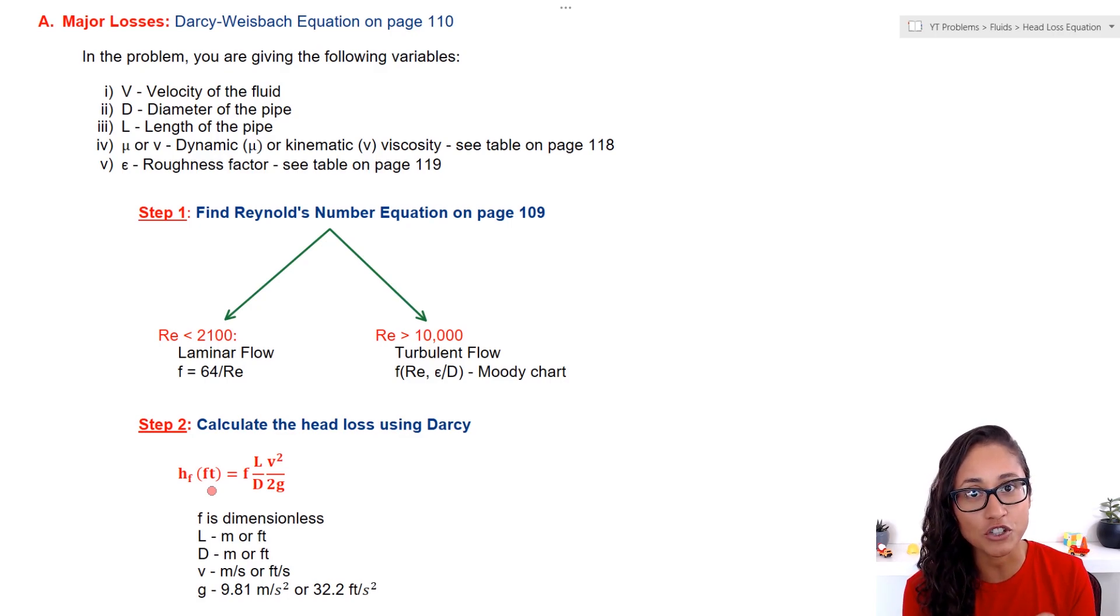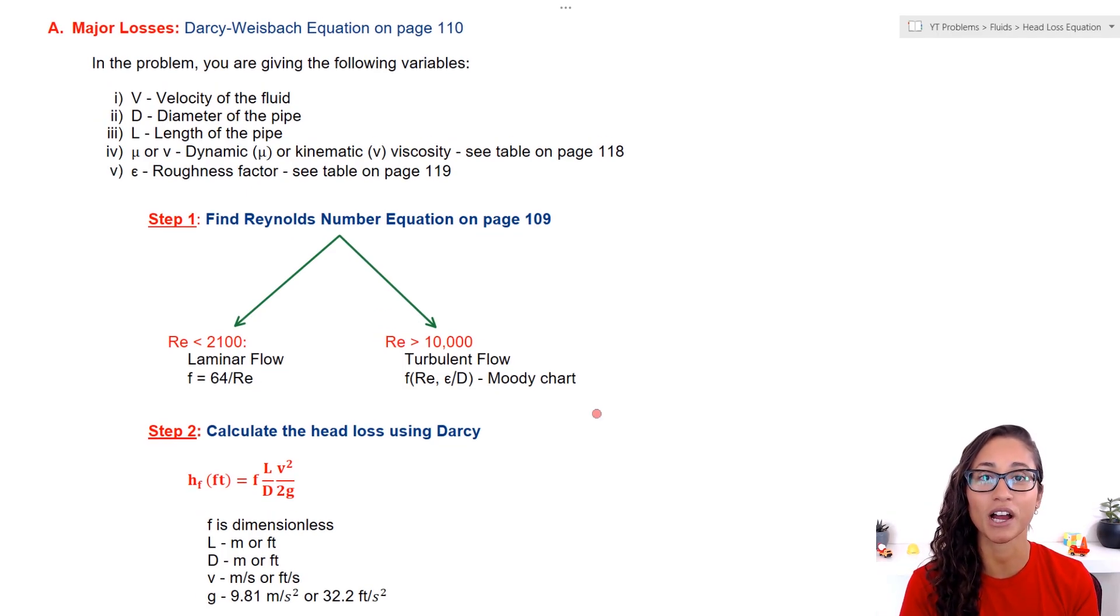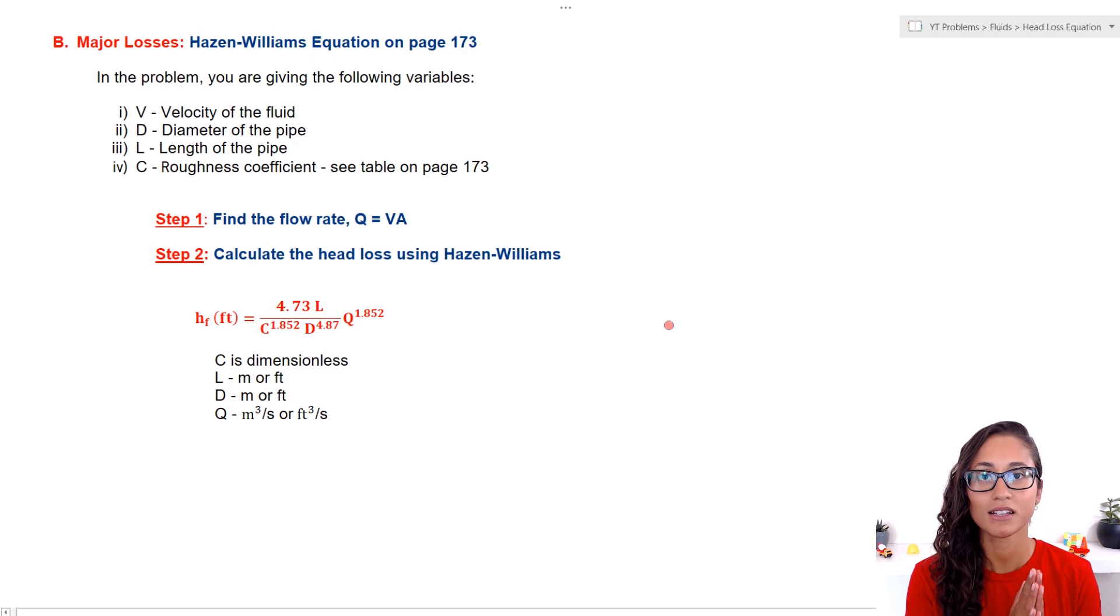Because every term in the Bernoulli equation—the pressure head, the elevation head, velocity head—those terms are in feet. And for the units to add up, your head friction or your head loss has to be in feet as well. I already did a video where I calculate the head loss using Darcy. I will leave the link above in case you want to check it out, and you can see how we apply these equations.